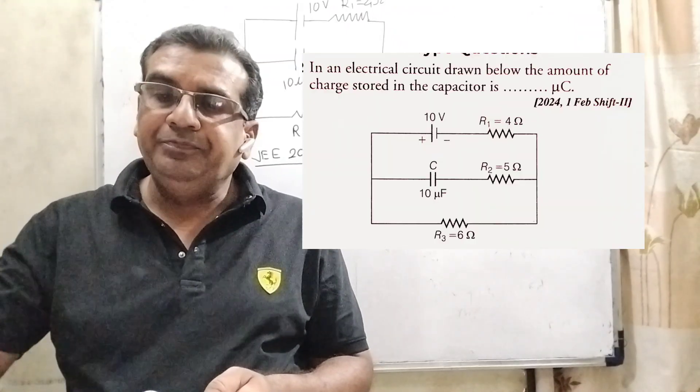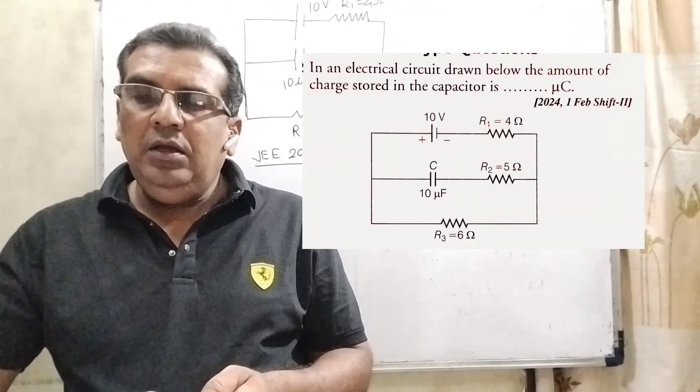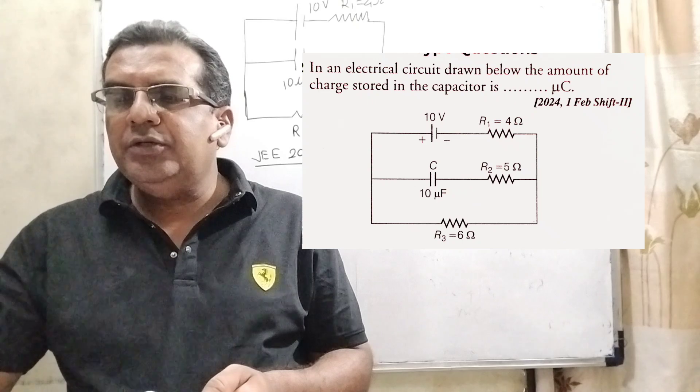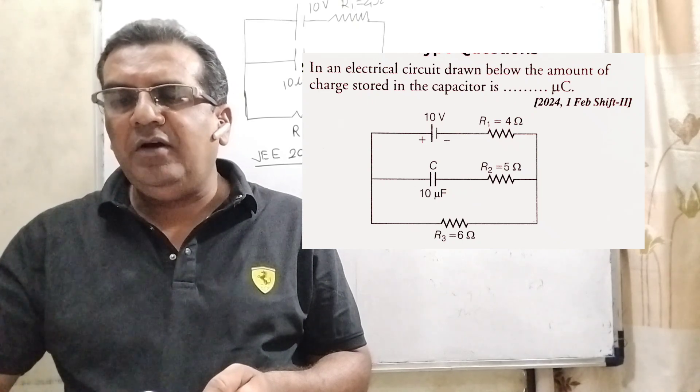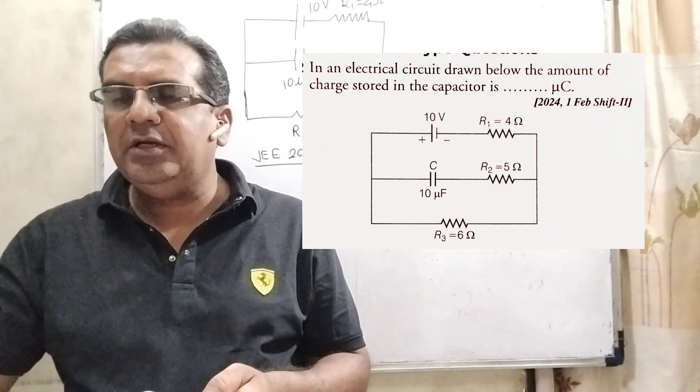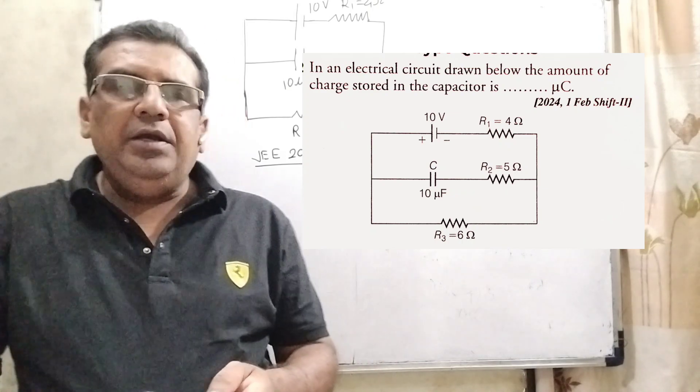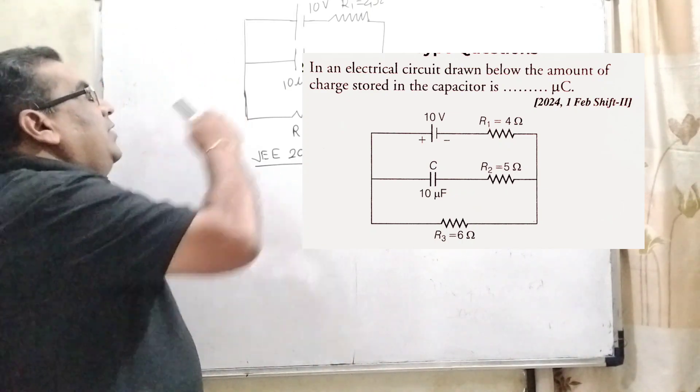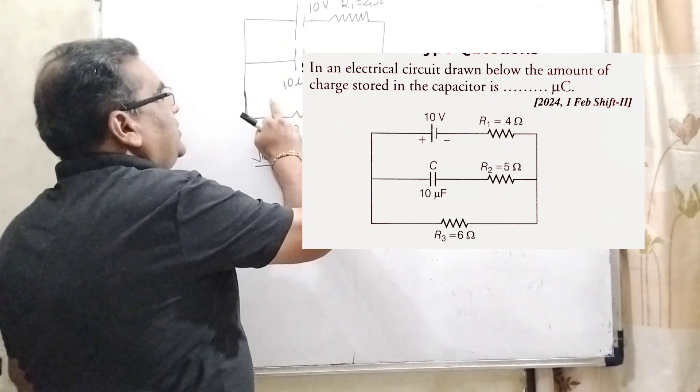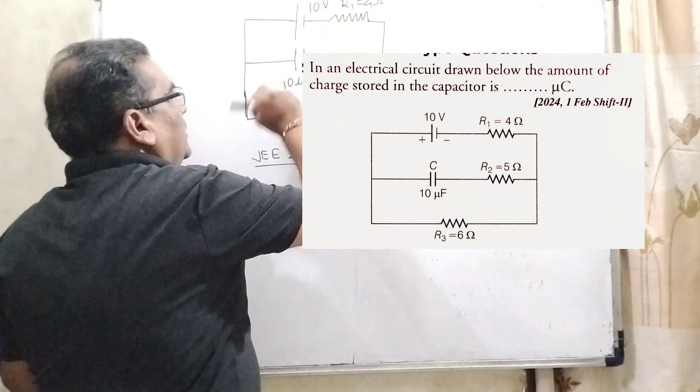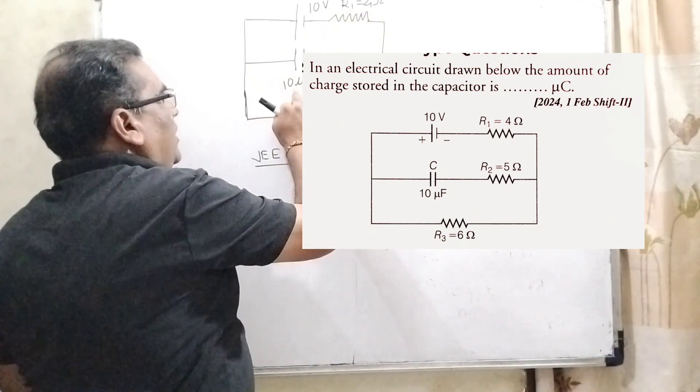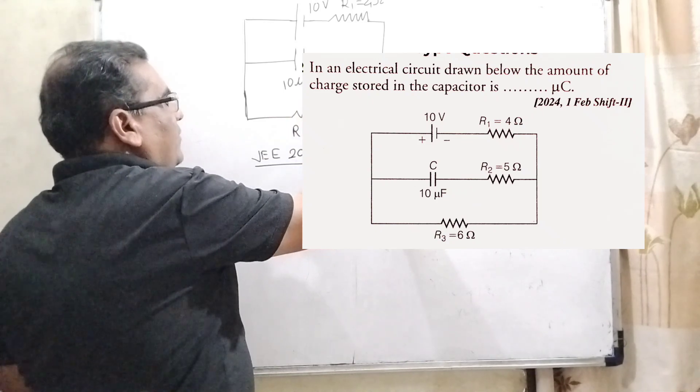Now here is the question. In an electrical circuit drawn below the amount of charge stored in the capacitor is in micro coulomb. And here we have given diagram. Here 10 volt battery is connected to this circuit. Here R1 is 4 ohm and capacitor in between 10 microfarad and resistance is 5 ohm.